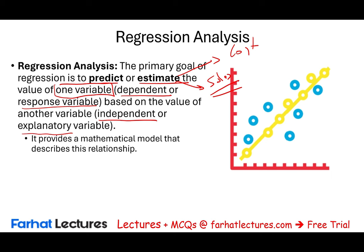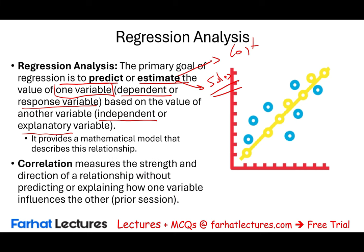There's a formula — we're going to look at it, but we don't have to go into the math; we just have to understand what it tells us. In the prior session we looked at correlation, which measures the strength and direction of a relationship without predicting how one variable influences the other. Make sure you don't confuse correlation with regression. In this session we'll focus specifically on simple regression.